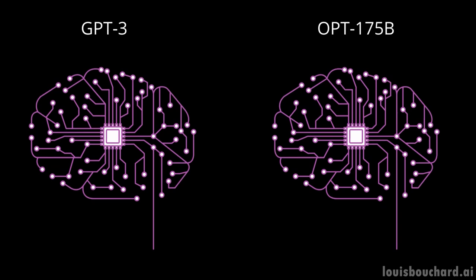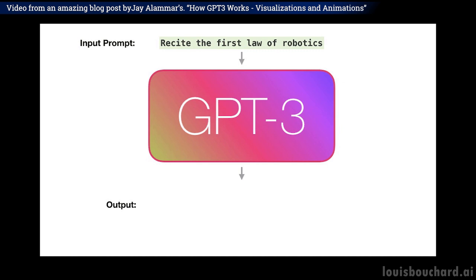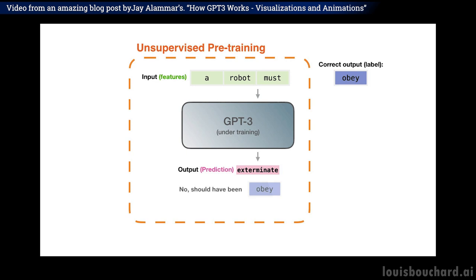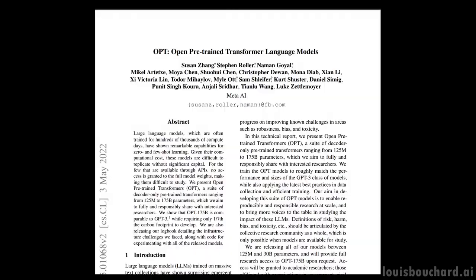OPT is a language model using transformers, which I covered in videos before, that was trained on many different datasets — one could say on the whole internet — to process text and generate more text. What I really wanted to cover here is Meta's effort to make this kind of model accessible to everyone, while putting a lot of effort into sharing its limitations, biases, and risks.